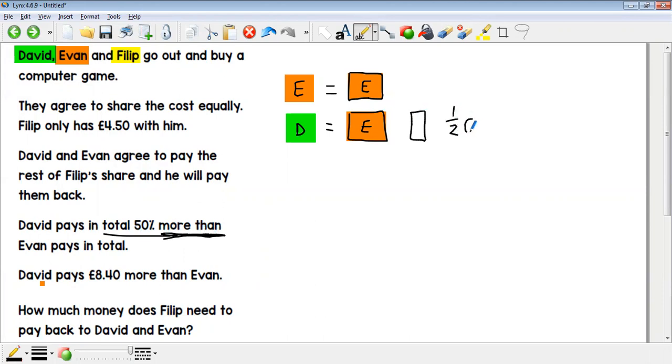50% is the same as a half, okay? So if we look here, everything to the left of that line means they're the same, so this extra bit floating here is that extra part here, half an Evan. David pays £8.40 more than Evan, so that means that this half an Evan over here must be worth £8.40.